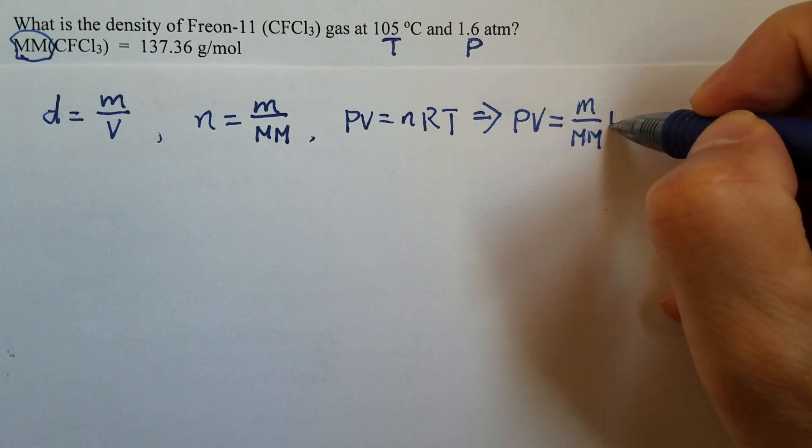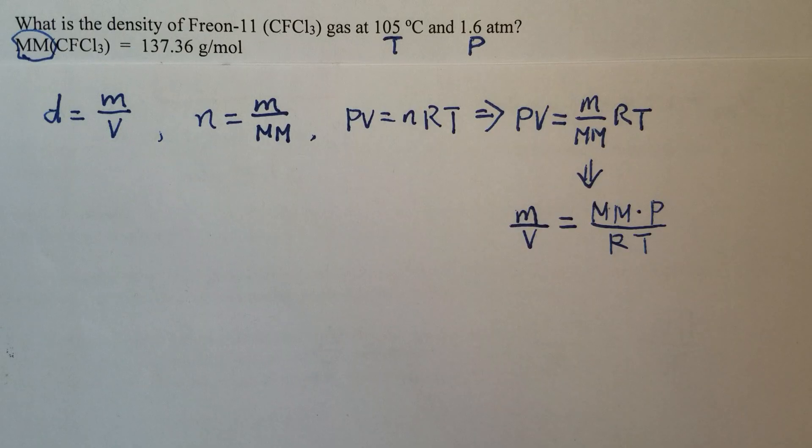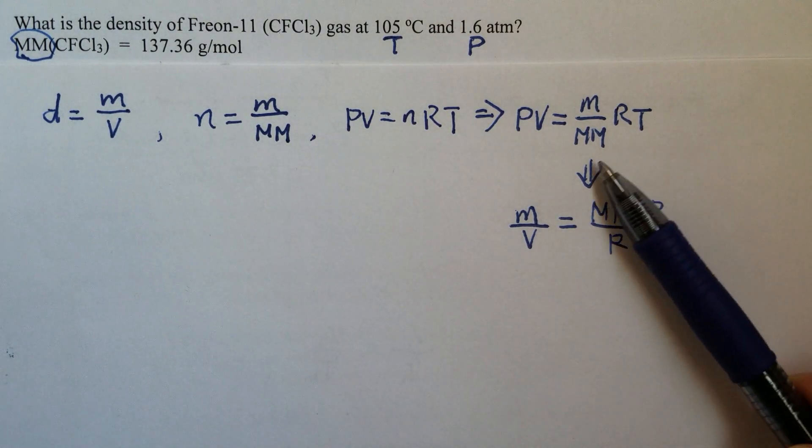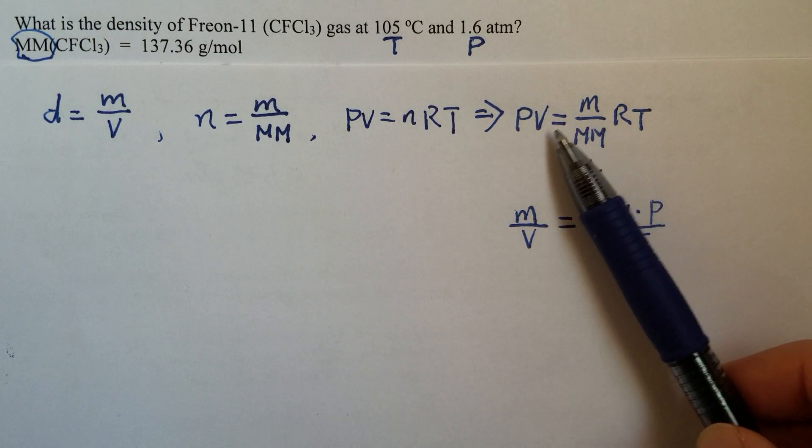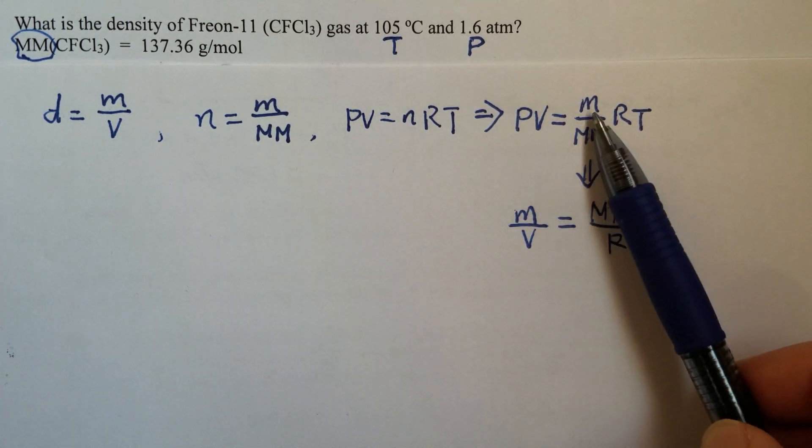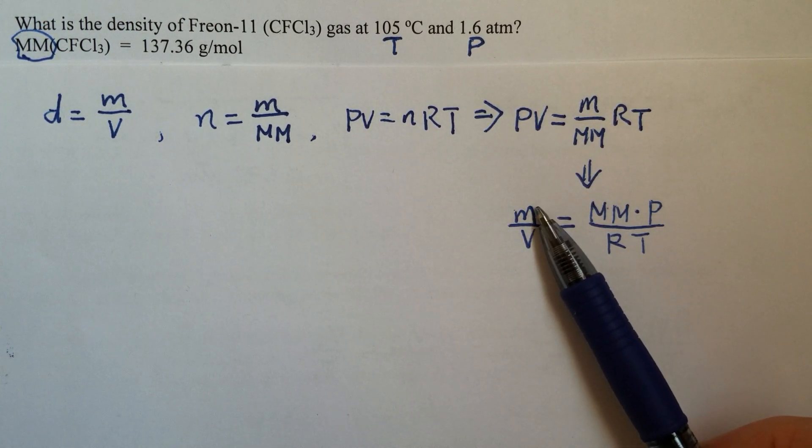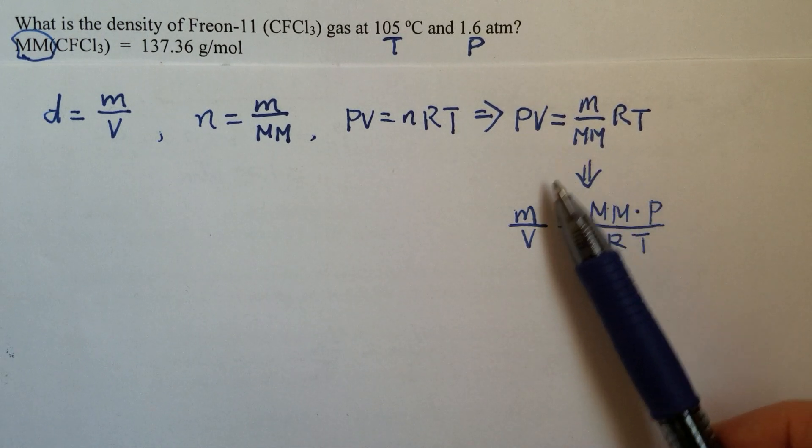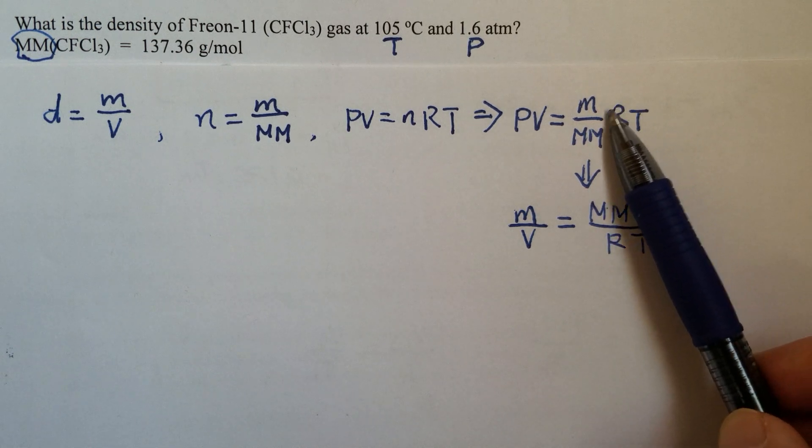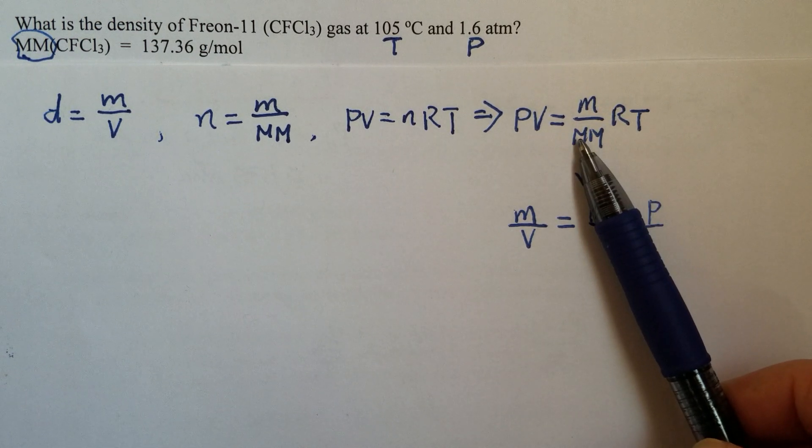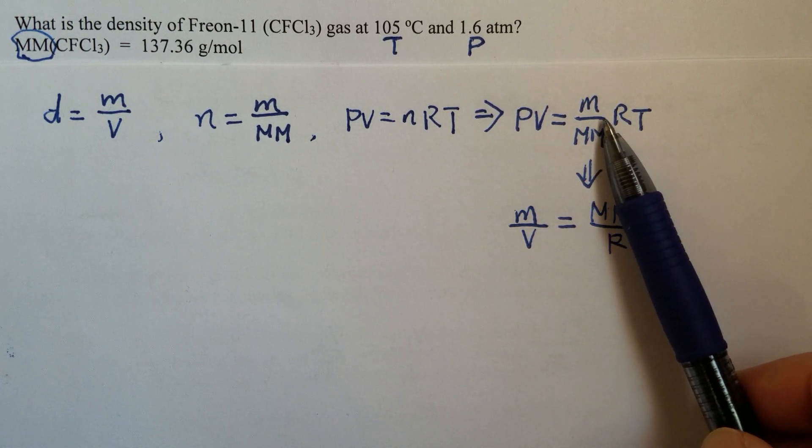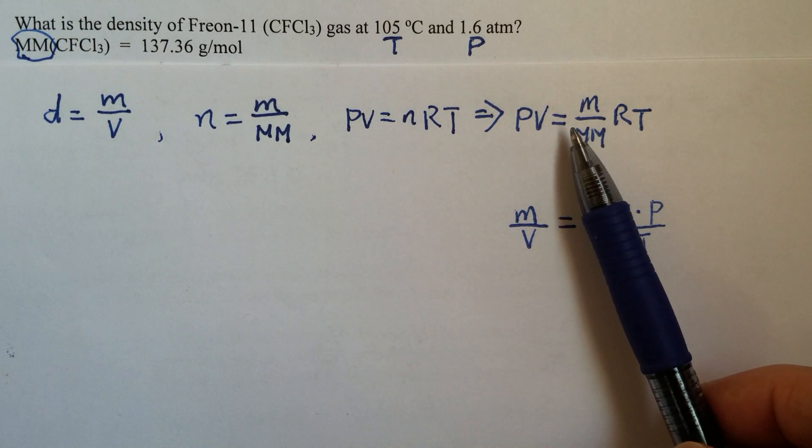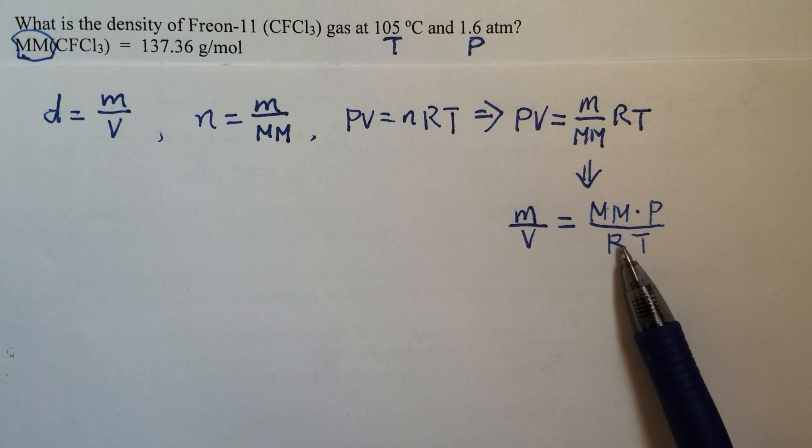So we can rearrange this equation. Move V to the other side, keep m. We keep the m, then V to the other side as a denominator. Now we'll move molar mass to the other side of the equation, so that becomes a numerator. RT again move to the other side of the equation, so that becomes denominator.